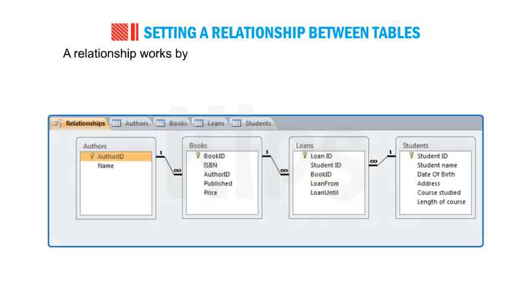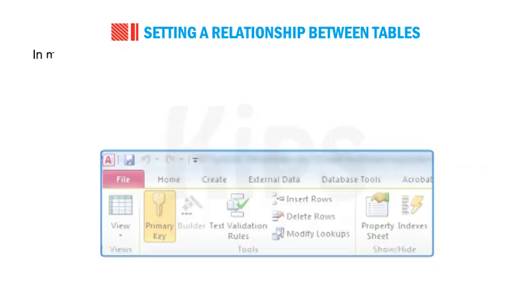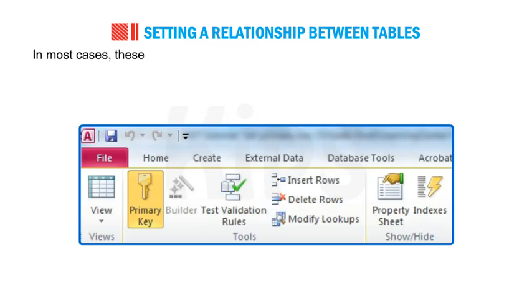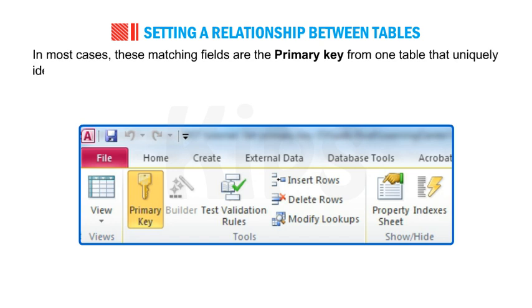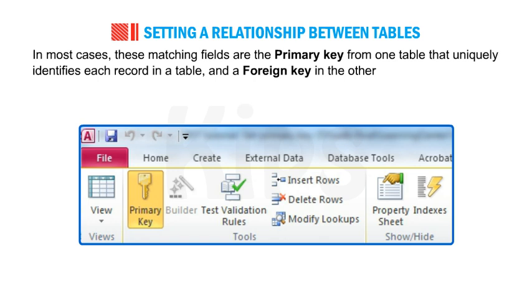A relationship works by matching a field with the same name in both tables. In most cases, these matching fields are the primary key from one table that uniquely identifies each record, and a foreign key in the other table.